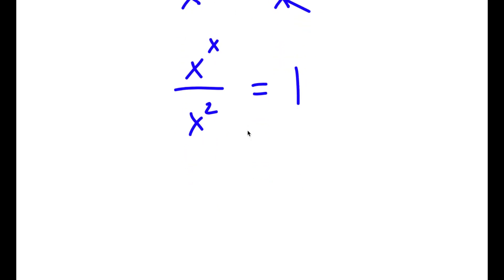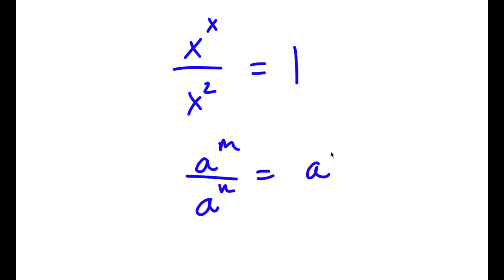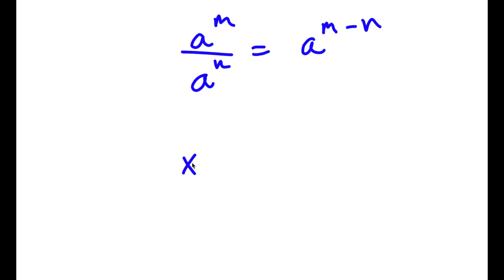Now, if I have something in the form a to the power of m over a to the power of n, this is equal to a to the power of m minus n. So x to the power of x over x to the power of 2 is going to equal x to the power of x minus 2, which is equal to 1.